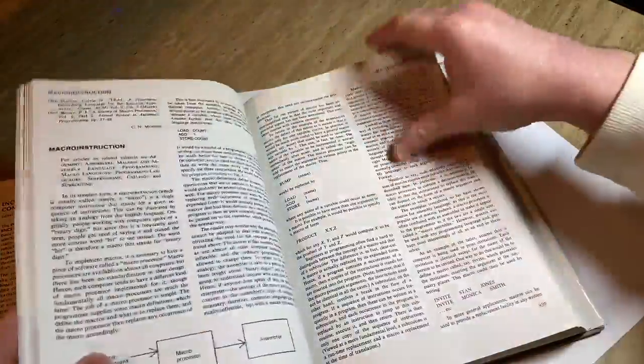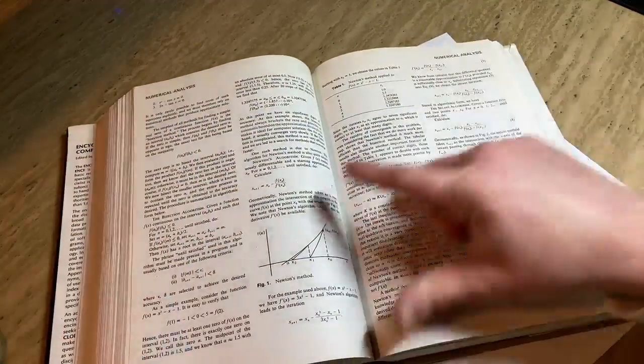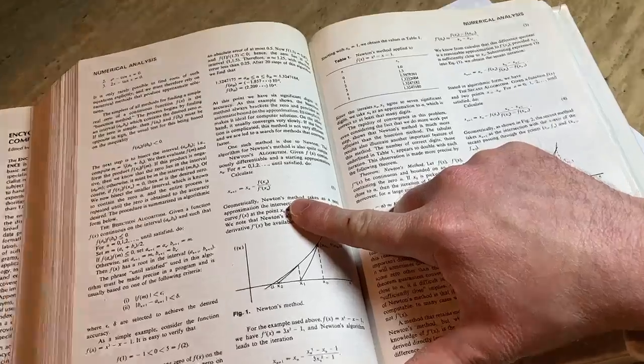It's got some mathematics. Let's jump to that. Here we have some mathematics. This is Newton's method. Let's take a look at this.